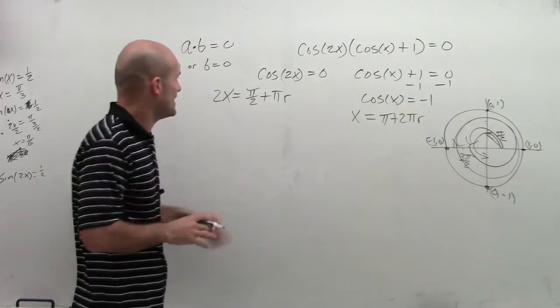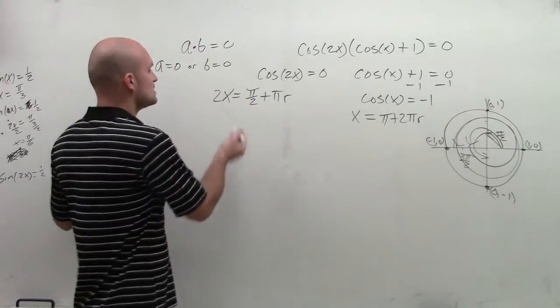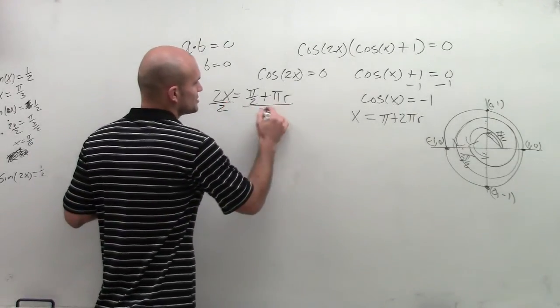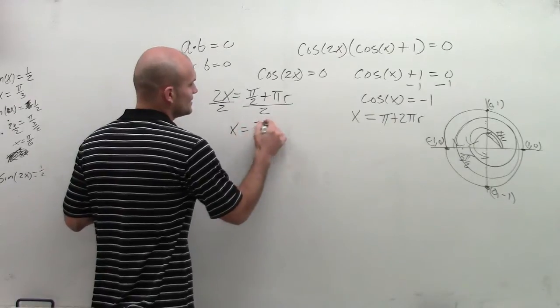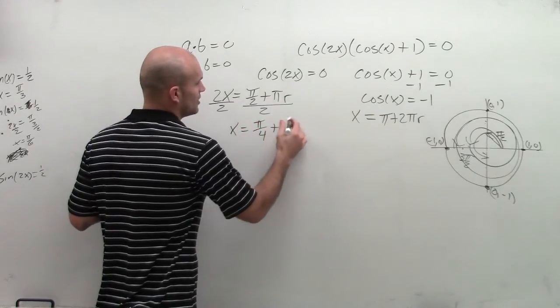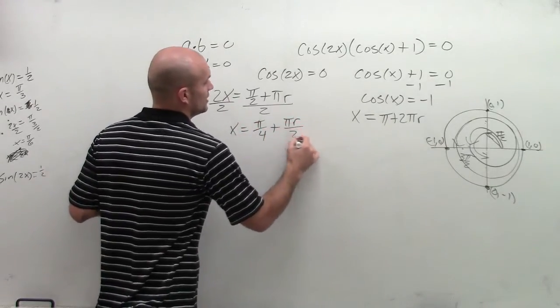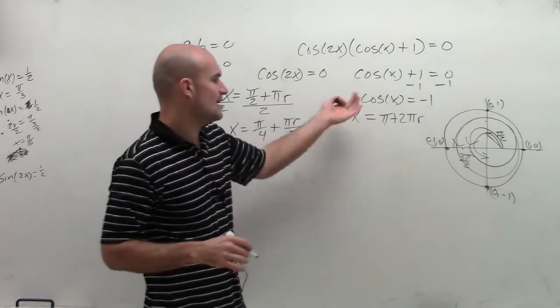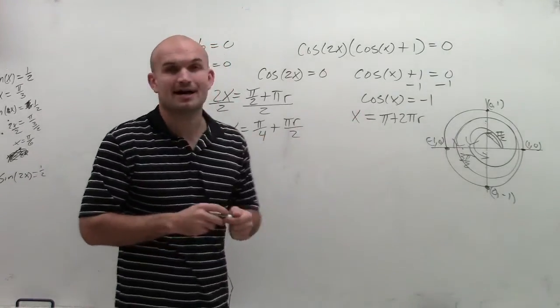Now, to finish up my multiple angle, we need to solve for x, right? So therefore, what I'm simply going to do is just divide by 2 here, and I get x equals pi divided by 4 plus pi r divided by 2. And over here, I just have x equals pi plus 2 pi times r.